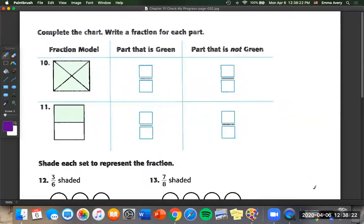Now we're going to complete the chart and write the fraction for each part. So you want to know the part that is green. So we have a total of one, two, three, four pieces. So our total is always going to go on the bottom and that's going to be the same over here too. And all four are shaded green. So we'll say four fourths. And the part that's not green is zero.